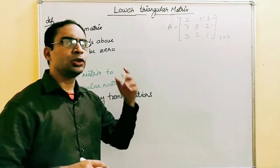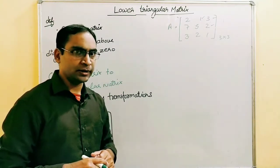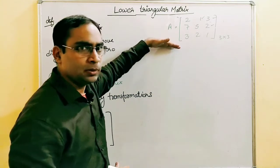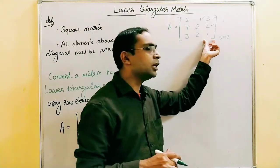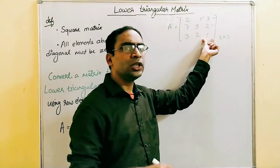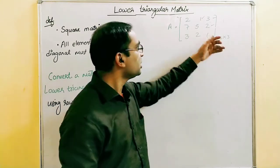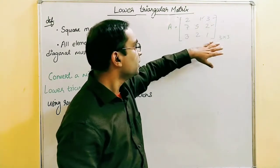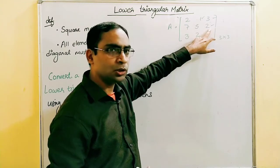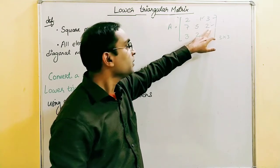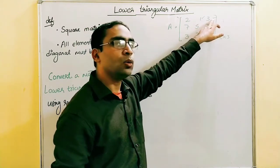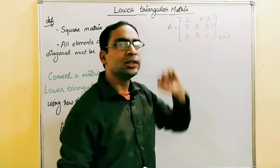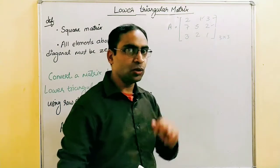Rule number two, just opposite to upper triangular: we need to move from bottom to top. If we are converting all elements of column three to zero, we'll start from bottom to top — first we'll convert the element in row number two to zero, and then the element in row number one to zero.